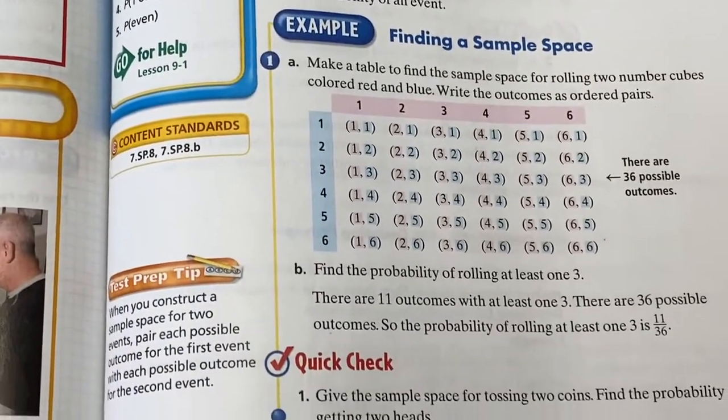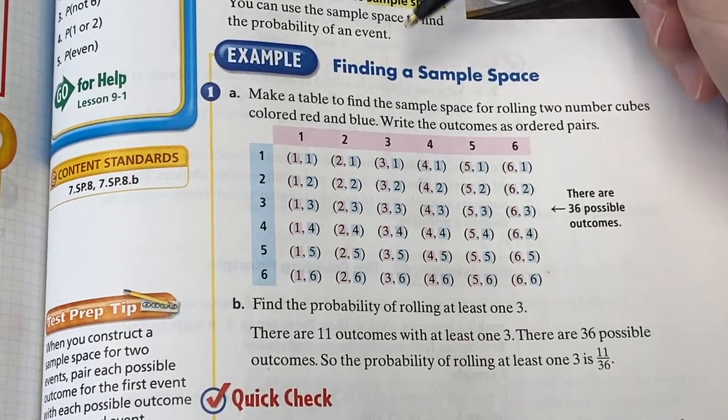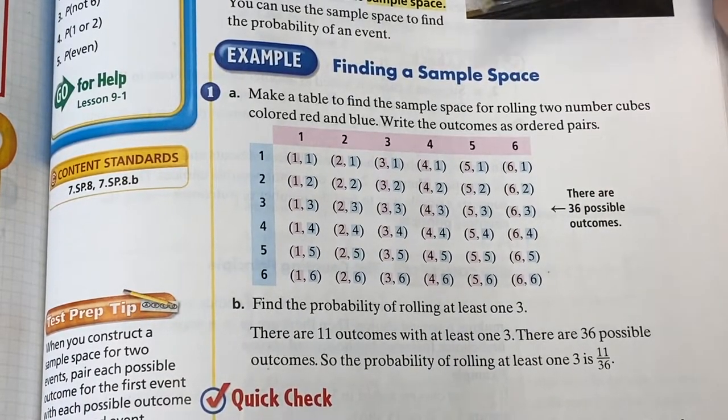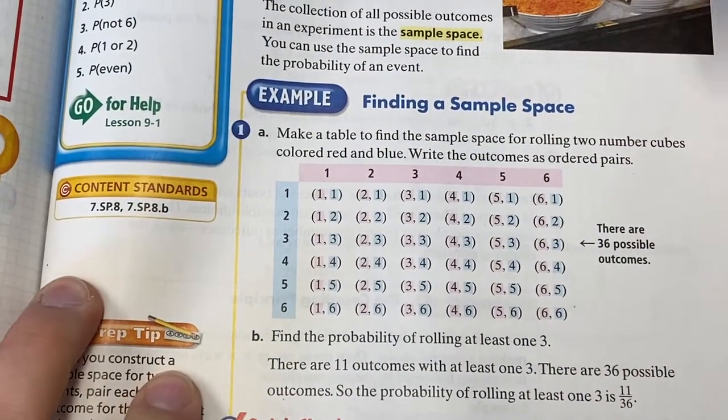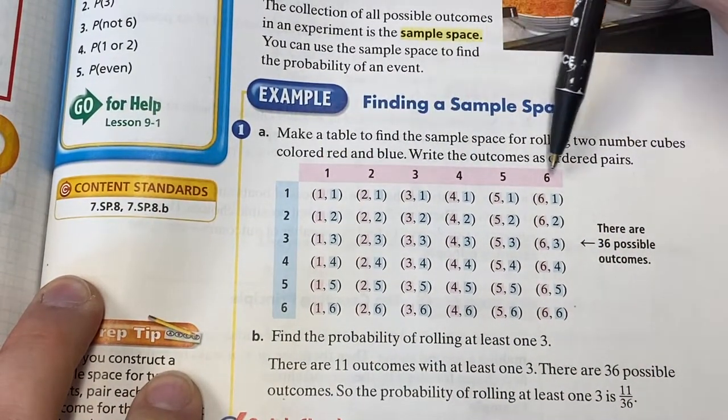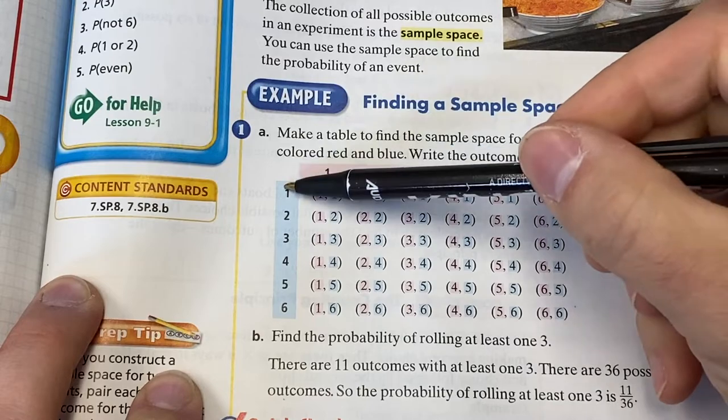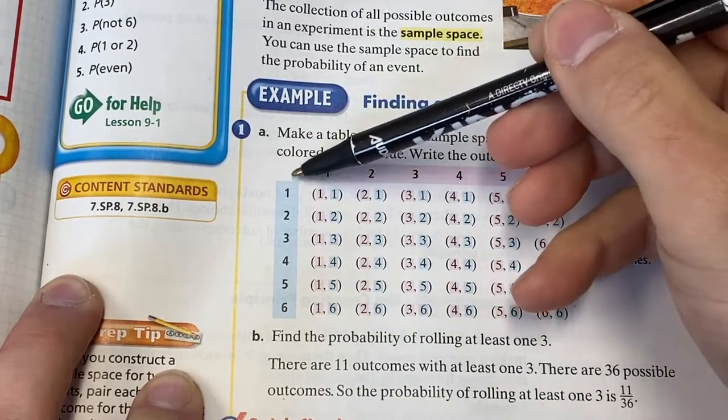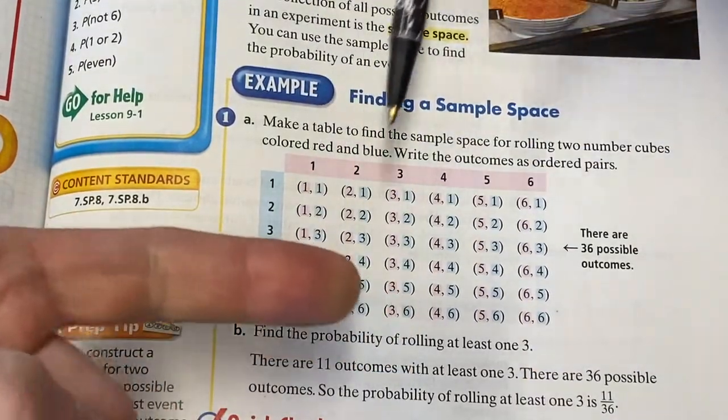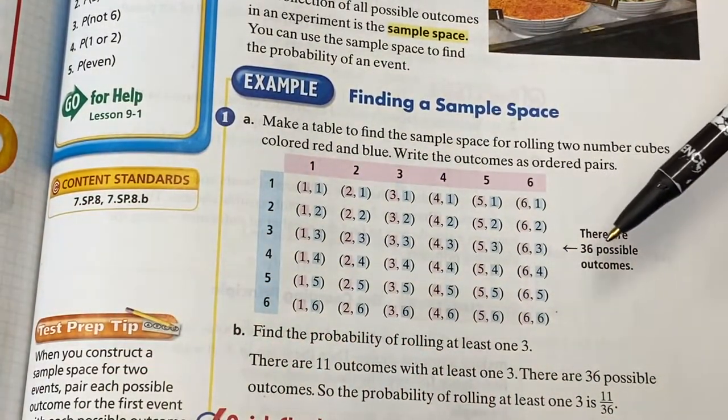So you can see here in example one, how would we make a sample space showing all the outcomes if we rolled two number cubes or two dice? It's real simple. You just write all the outcomes of one along the top and all the outcomes of the other along the side. Now this is two dice, so it's one through six for the one and one through six for the other. Then you just pair each and every outcome together.